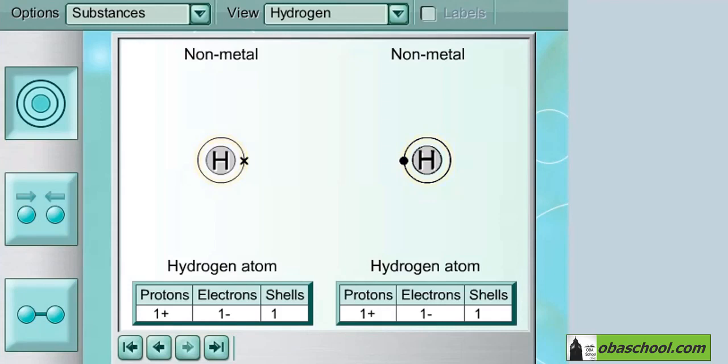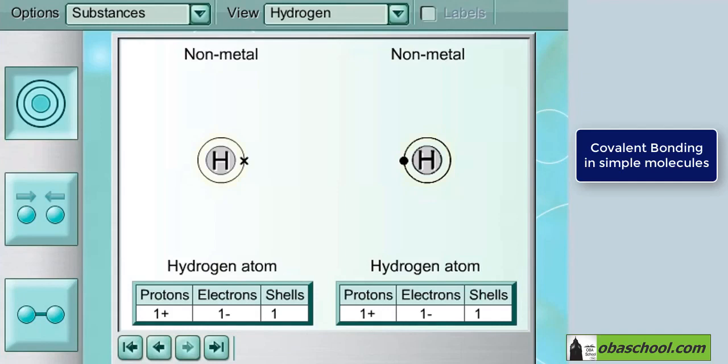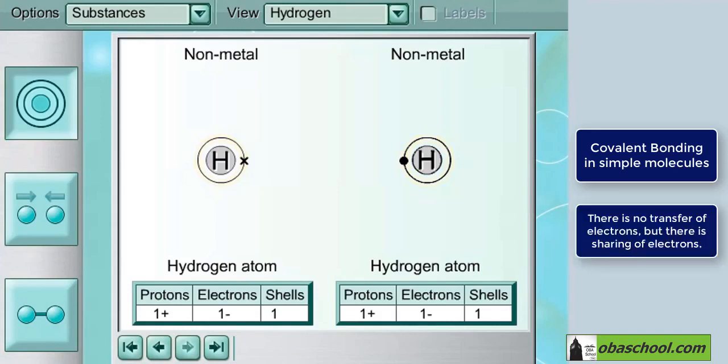In the simulation we're going to demonstrate covalent bonding in simple molecules. When two nonmetal atoms react with each other, they both need electrons to fill their outer shells. So instead of a transfer of electrons from one atom to the other, they share their outer electrons.